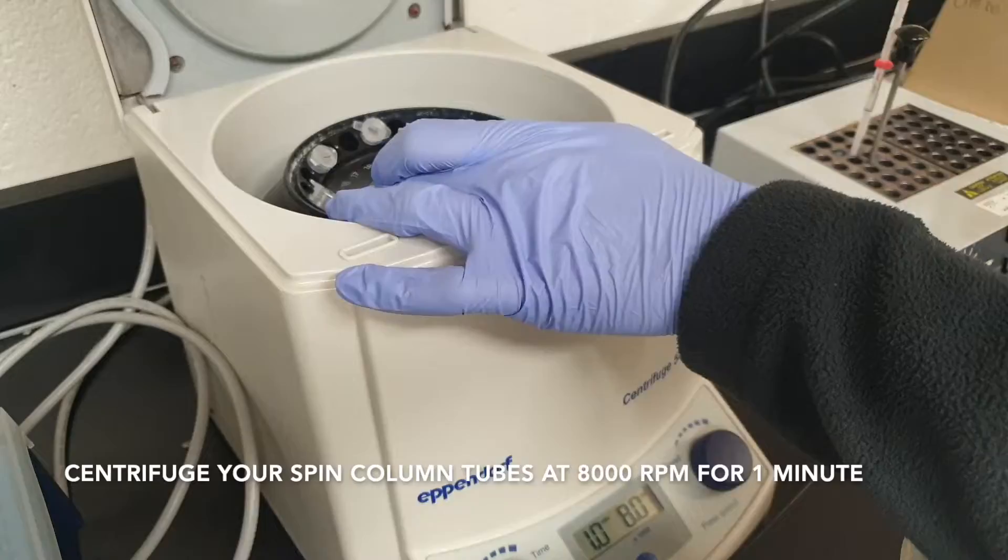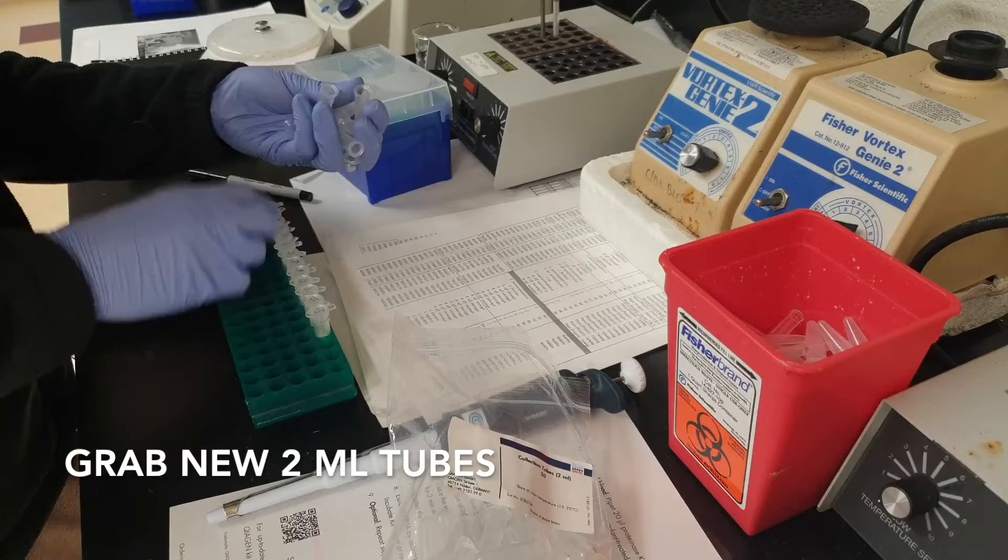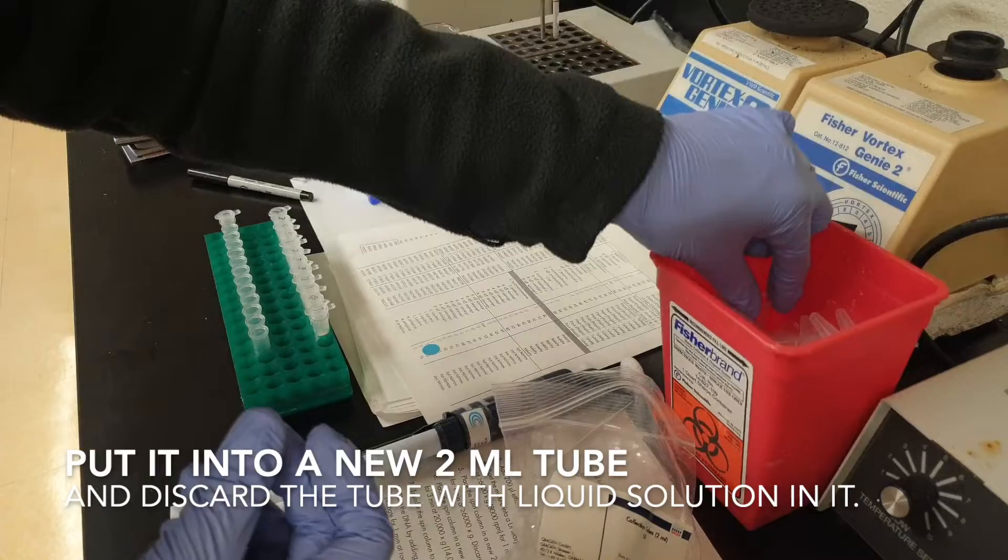Centrifuge your spin column tubes at 8000 rpm for about a minute. Make sure there's no liquid above the spin column; if so, just repeat the process. Grab new 2 ml tubes, remove the spin column, discard the flow-through, and place them into new 2 ml tubes.